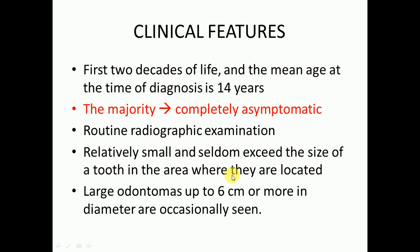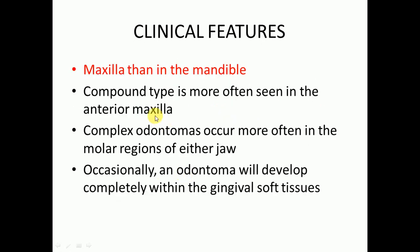Odontomas are relatively small and seldom exceed the size of a tooth in the area where they are located, though large odontomas up to six centimeters or more in diameter are occasionally seen. If you talk about mandible and maxilla, the maxilla is more commonly involved than the mandible. Compound type is more often seen in the anterior maxilla, whereas complex odontomas are more commonly present in the molar region of the mandible. Occasionally an odontoma will develop completely within the gingival soft tissues.